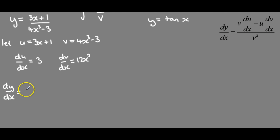So we've got v times the derivative of u and that's then minus u times the derivative of v and then that's all divided by v squared.